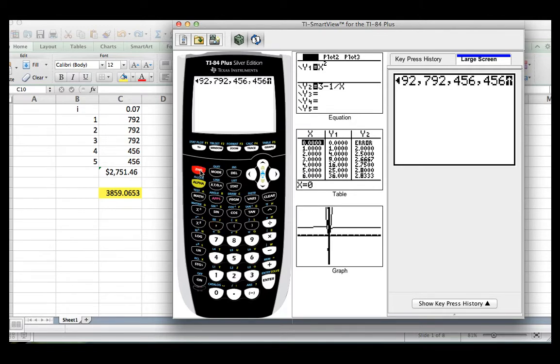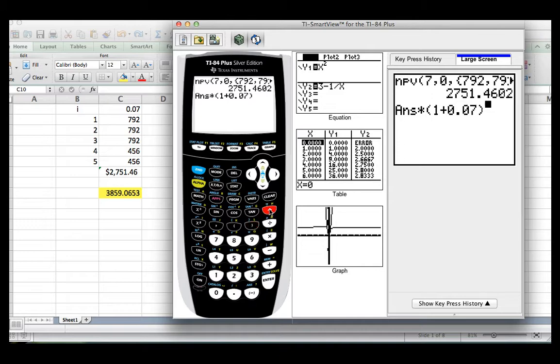Almost done, then second, and then you close the brackets, and then parentheses, and then enter. We got the same amount, and then you can just grab your answer, and then you just do 1 plus 0.07, and then you elevate that to the fifth. Bingo! We got our future value, and that's it.